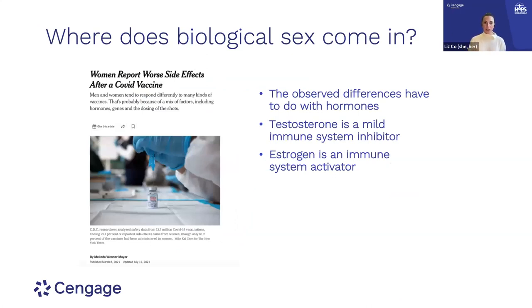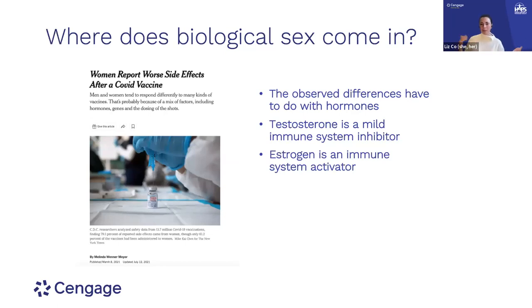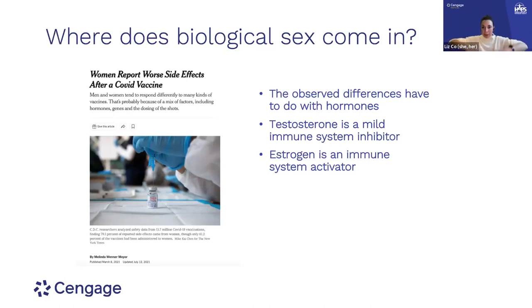If we bring it back to the original article — women report worse side effects after a COVID vaccine — but why would that be? It turns out our sex hormones, testosterone and estrogen, have very different effects on the immune system. Testosterone is a mild immune system inhibitor — it dampens down immune responses slightly. Whereas estrogen is an immune system activator — it really elevates or exacerbates the responses by the immune system.